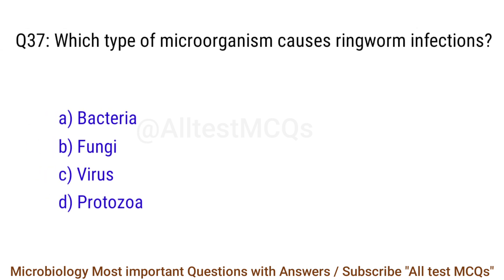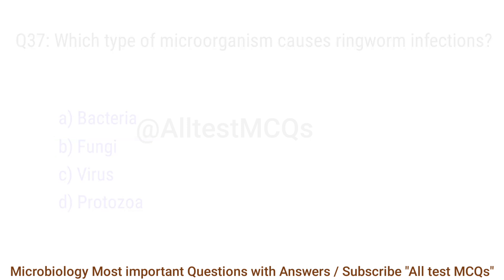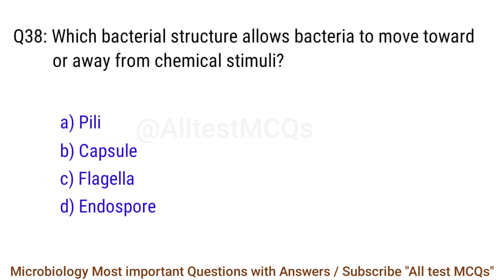Q37. Which type of microorganism causes ringworm infections? The correct answer is option B: Fungi. Q38. Which bacterial structure allows bacteria to move toward or away from chemical stimuli? The right answer is option C: Flagella.